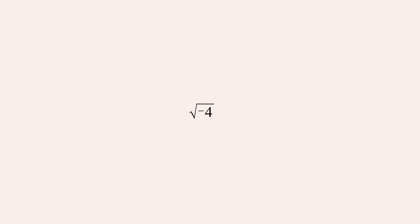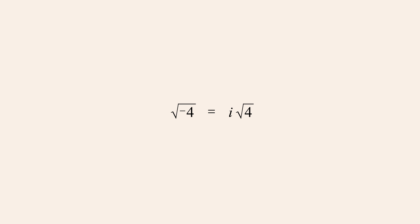For example, the square root of negative 4 can be written as the square root of negative 1 times positive 4, which can be separated into the square root of negative 1 times the square root of 4. And since the square root of negative 1 is i, the square root of negative 4 is i times the square root of 4, which is i times 2, or 2i.